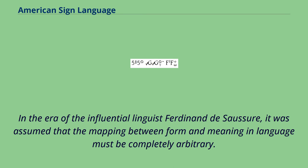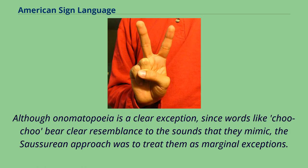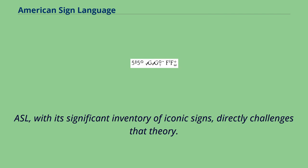In the era of the influential linguist Ferdinand de Saussure, it was assumed that the mapping between form and meaning in language must be completely arbitrary. Although onomatopoeia is a clear exception, since words like 'choo-choo' bear clear resemblance to the sounds that they mimic, the Saussurean approach was to treat them as marginal exceptions. ASL, with its significant inventory of iconic signs, directly challenges that theory.